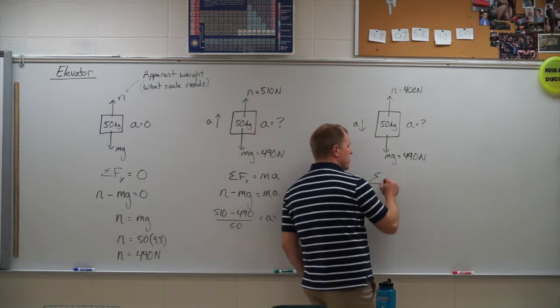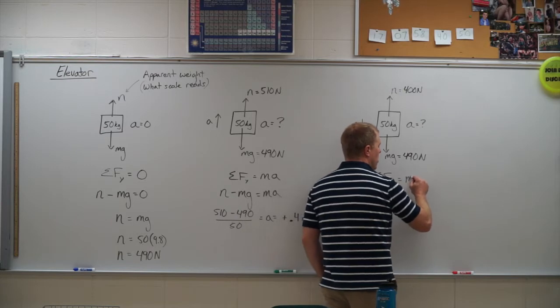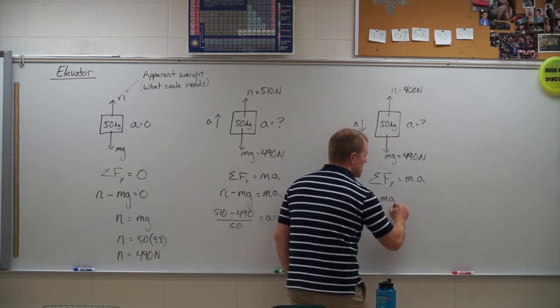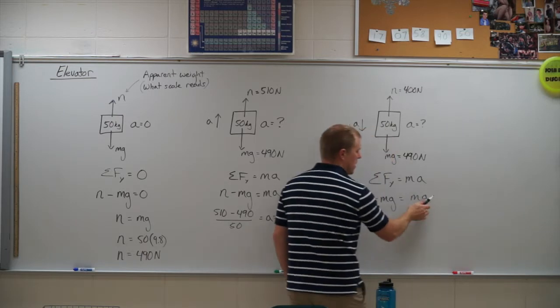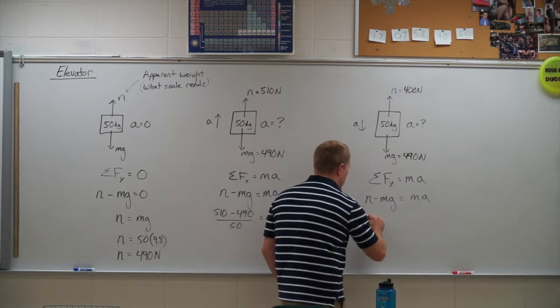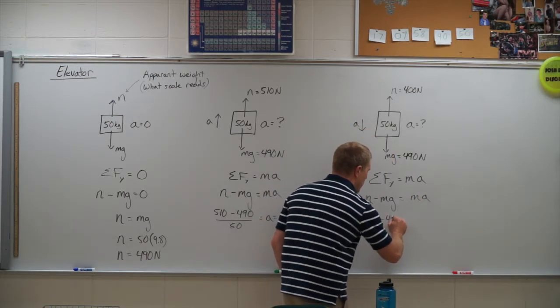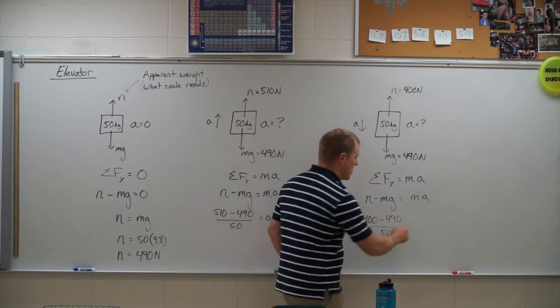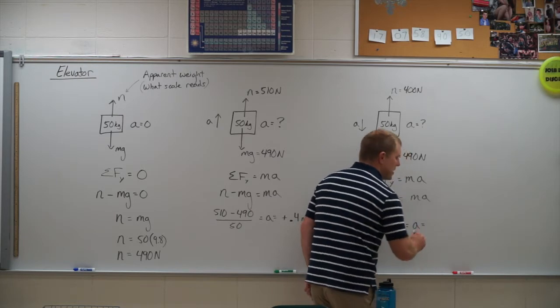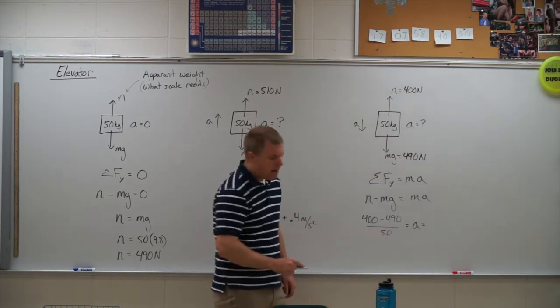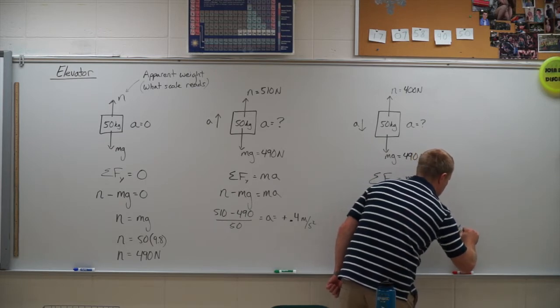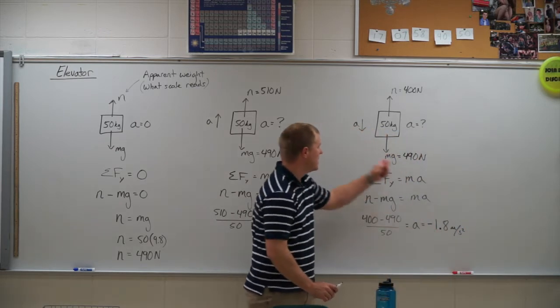The next one. Do the same kind of deal. We're summing up the forces in the y direction. It's going to cause the mass to accelerate. So I have normal force minus mg equals Ma. We're going to divide the m over. So I have 400 minus 490 divided by 50. So here I'm going to get a negative number on top. And so my acceleration comes out to be negative 1.8 meters per second squared. Again, the negative is telling me that it is going down.